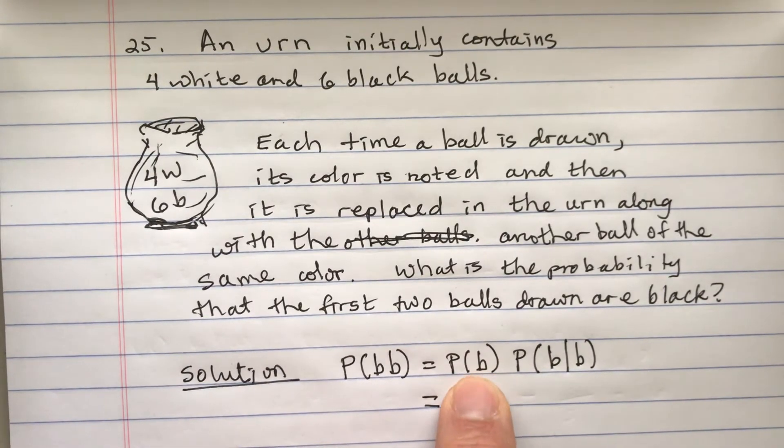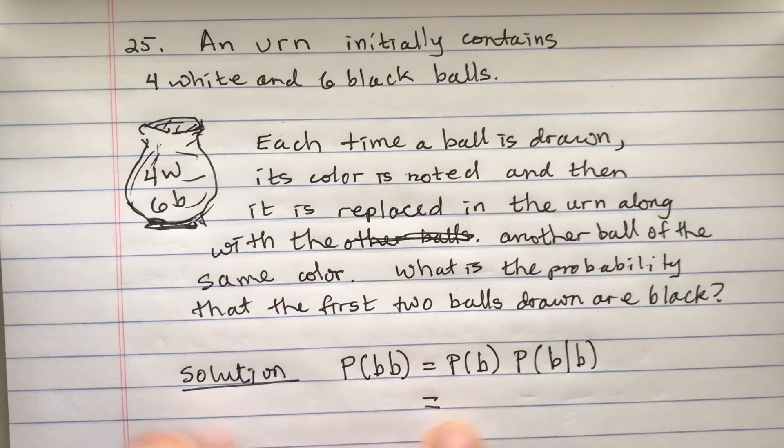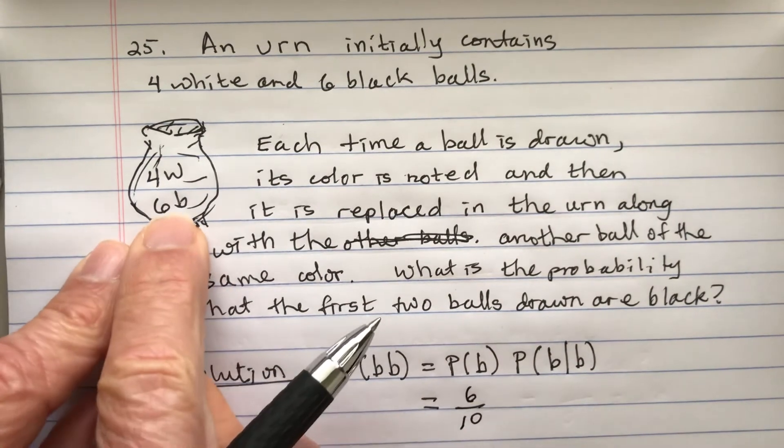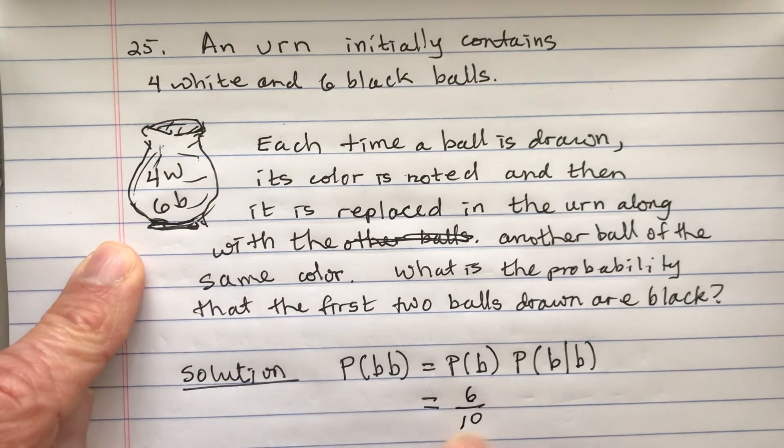So what's the probability when we have the first thing happening that we get a black? Well that's going to be six out of ten. Why out of ten? Because there's ten in total. So six out of ten.